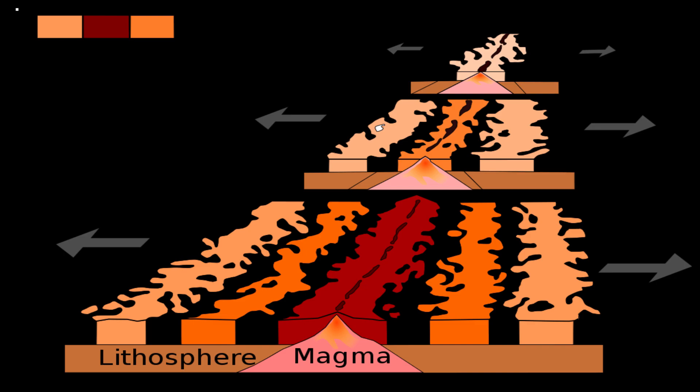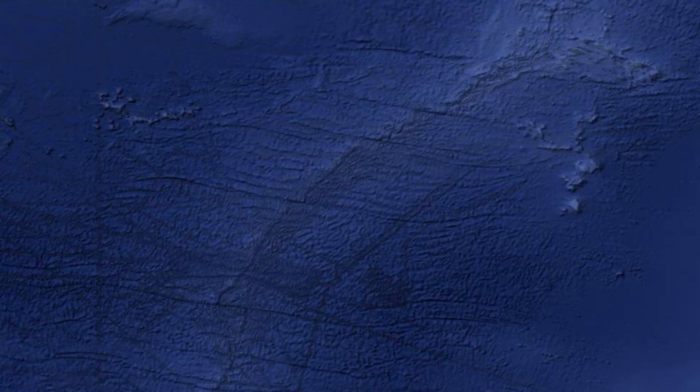It was also noted that as you traveled away from the Mid-Atlantic Ridge, the basalt got older, and the closer you got to the Mid-Atlantic Ridge, the basalt was younger, which then showed that new oceanic crust was being made in this mountain range, and that the sea floor was spreading apart and new magma was filling the gaps, creating new crust.